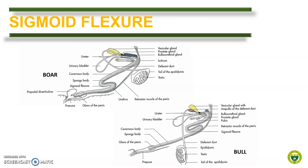As mentioned, the lengthening of the fibroelastic type penis is due to the straightening of the sigmoid flexure — the S-shaped structure as shown here. Here is an illustration showing a boar and a bull reproductive tract. Boars are classified as having a pre-scrotal sigmoid flexure because the sigmoid flexure is present before the testicle. On the other hand, bulls and other ruminants are classified as post-scrotal because the sigmoid flexure is located after the testicle.